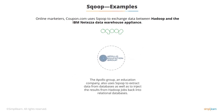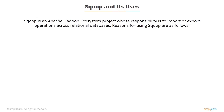The Apollo Group, an education company, also uses Sqoop to extract data from databases as well as to inject the results from Hadoop jobs back into relational databases. Sqoop is an Apache Hadoop ecosystem project whose responsibility is to handle import or export operations across relational databases like MySQL, MS SQL, and Oracle to HDFS. Let's discuss the various reasons for using Sqoop.